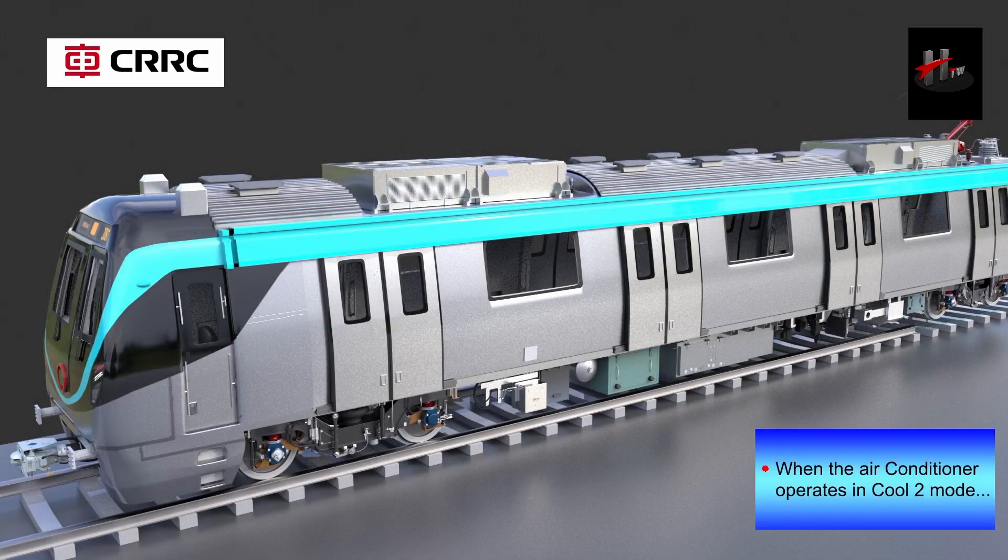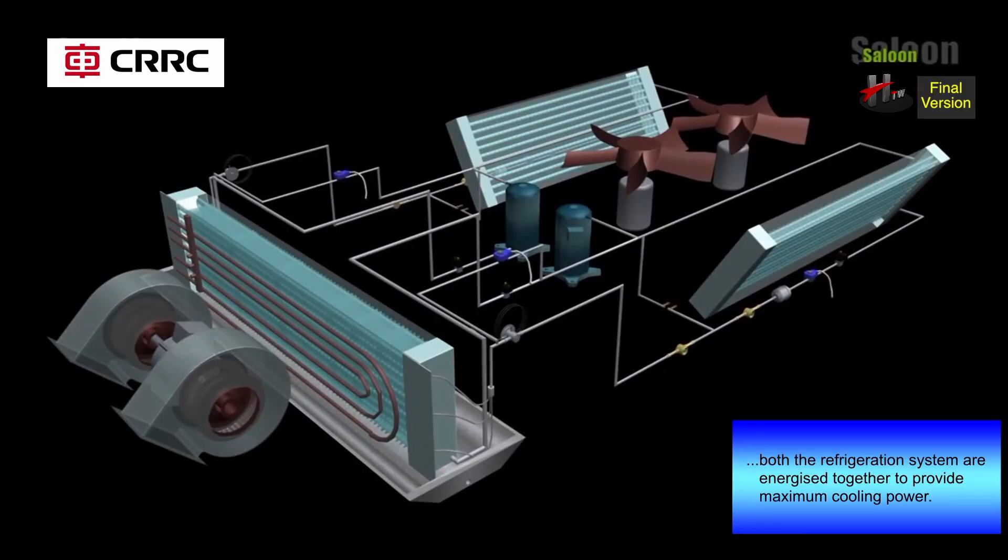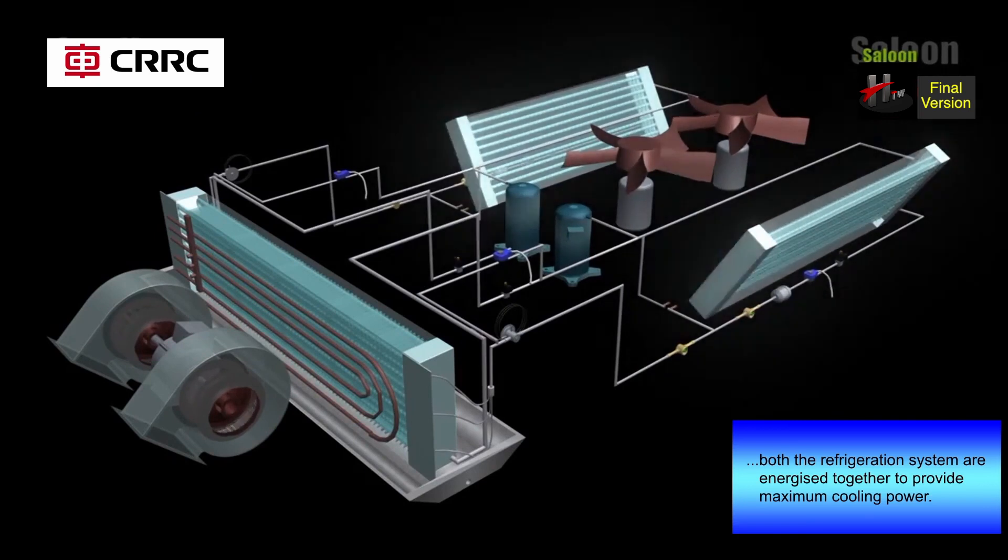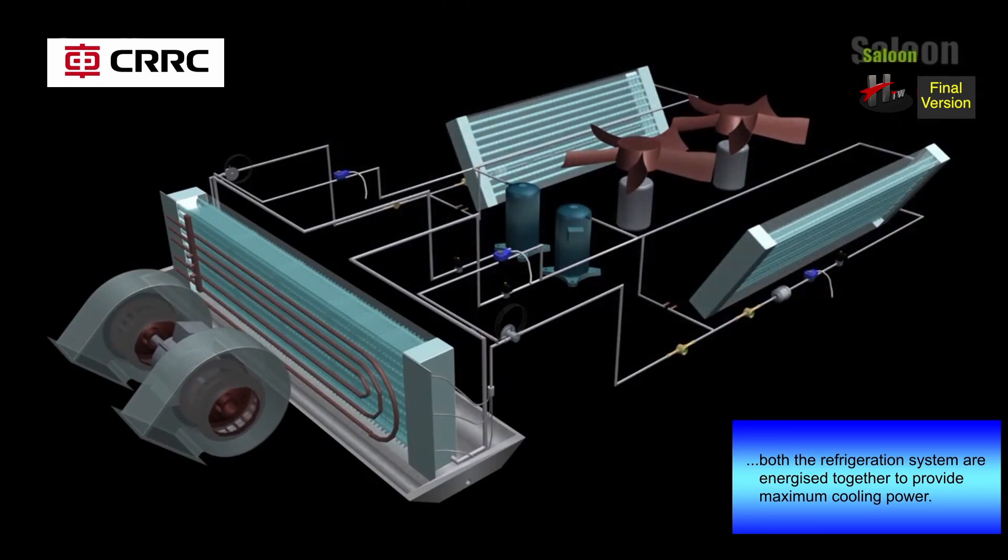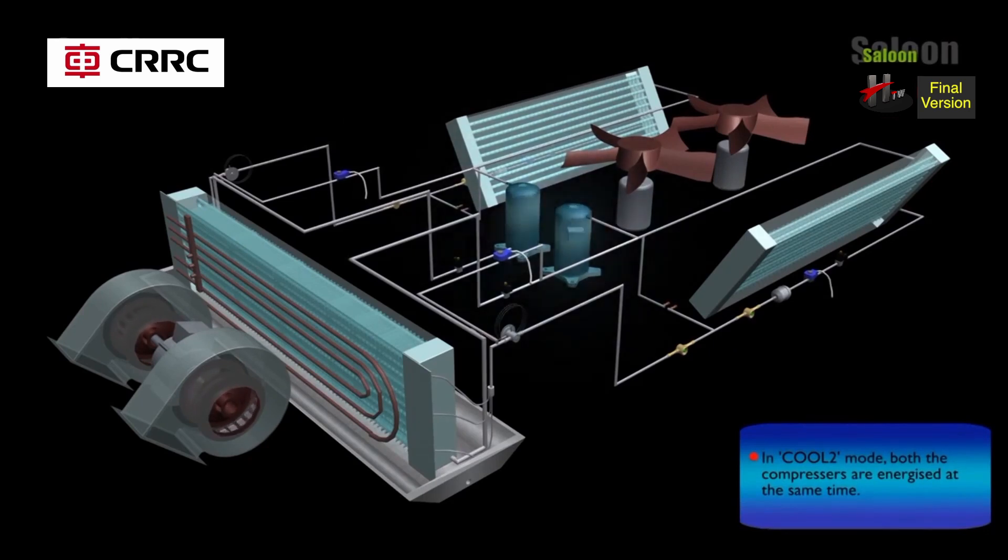When the air conditioner operates in cool 2 mode, both the refrigeration circuits are energized together to provide maximum cooling power to the passengers. In cool 2 mode, both the compressors are energized at the same time.